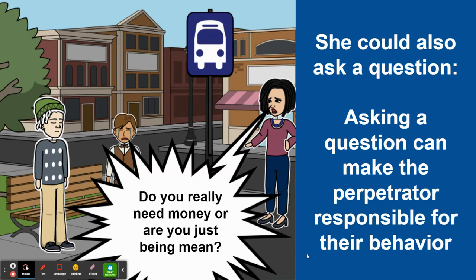Or she could also ask a question. Asking a question can make the perpetrator feel responsible for their own behavior. So she is asking the older boy, 'Do you really need money, or are you just being mean?'